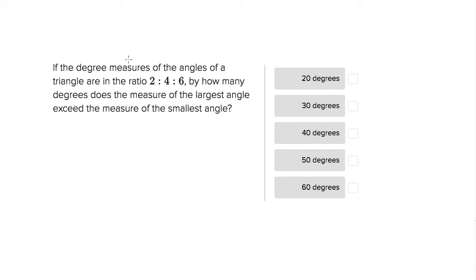This is Sophie Heller, and this is an SAT geometry question. The question is asking us this abstract question about the degree measures of an angle and their ratios.